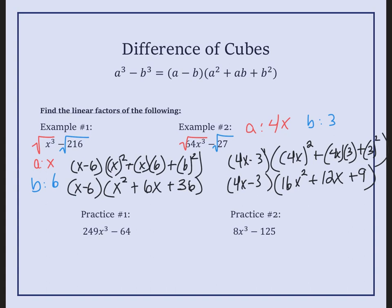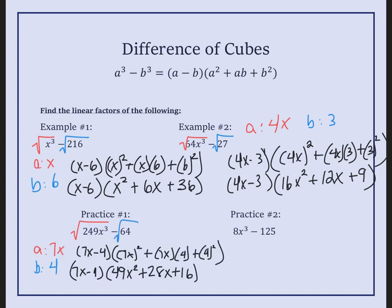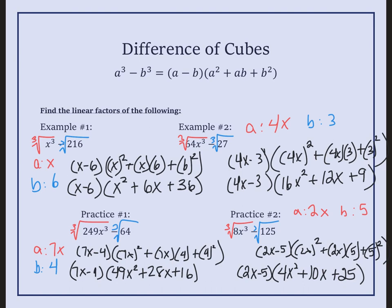Go ahead and pause this video and try practice numbers 1 and 2 on your own. Check your work on practice 1. The cube root of 343 is 7, and the cube root of x cubed is x. The cube root of 64 is going to be 4. Make sure in your calculator you are doing the cubed root. Be careful here — this tends to be where the mistake is. All of 7x had to be squared. The biggest mistake is students putting just 7 here, but really 7 has to be squared. Pause it and try the last one on your own, then check your work.